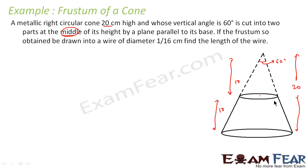Since this is a conversion from one shape to another, the volume of the frustum will be equal to the volume of the wire, and from that we can find the length of the wire. First, let's find the volume of the frustum.